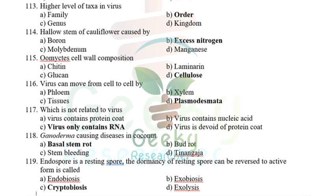Higher level of taxonomic size in virus — up to the 1990s and 2000s it was order; now after 2017–18 it may be kingdom or family. I'm not sure — please let me know with a strong reference.